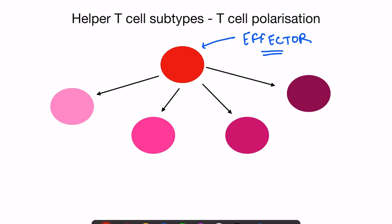Helper T cells have certain subsets: Th1, Th2, Th17, and T regulatory cells. This is important because helper T cells help all other immune cells, but depending on which helper T subset is formed, a particular type of immune cell will be helped.